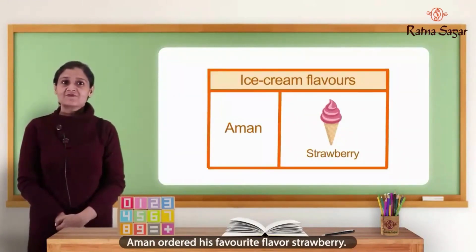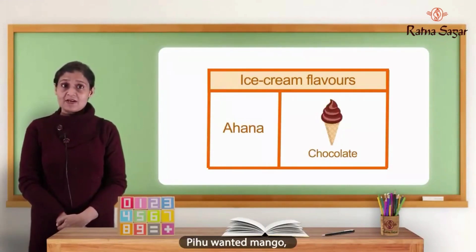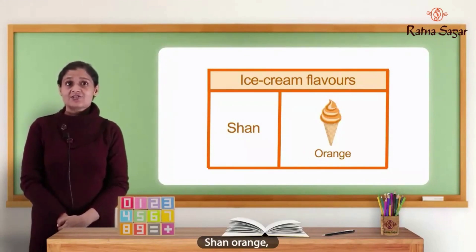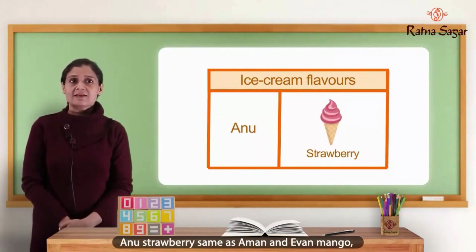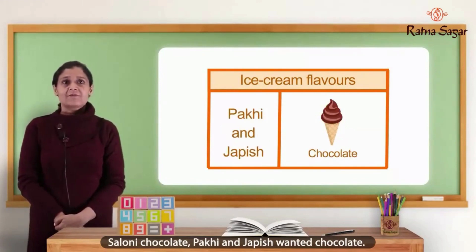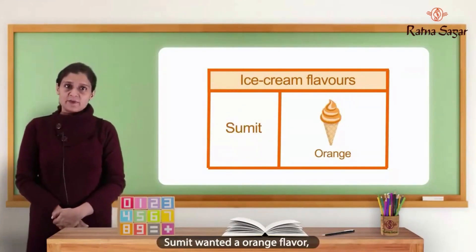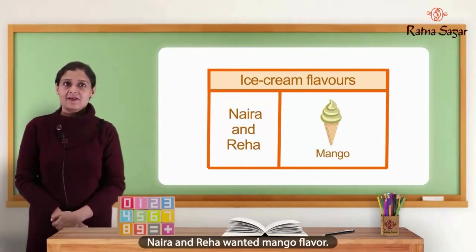Aman ordered his favorite flavor strawberry. Pihu wanted mango. Ana wanted chocolate. Diyah chocolate. Shan orange. Raghav also wanted chocolate flavor. Anu strawberry, same as Aman, and Ivan mango. Saloni chocolate. Pakheed and Japesh wanted chocolate. Sumit wanted orange flavor. Neha also wanted orange. Nayra and Reha wanted mango flavor.